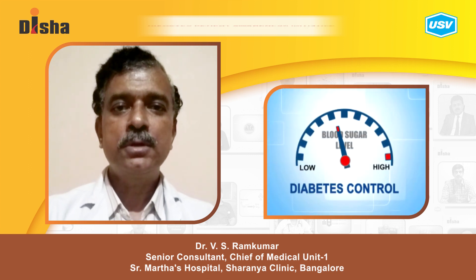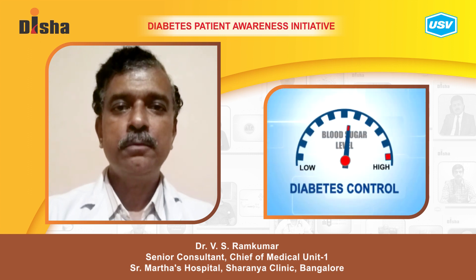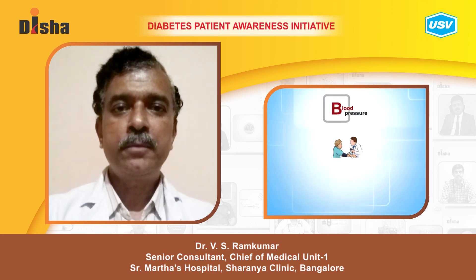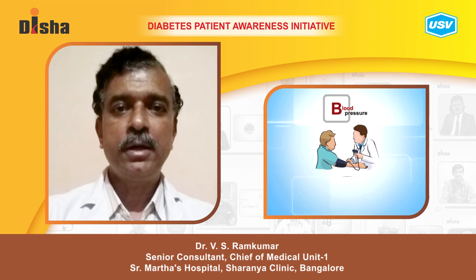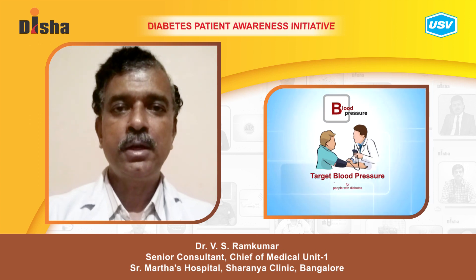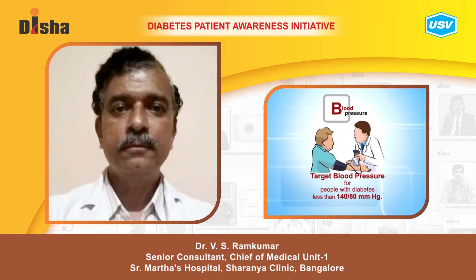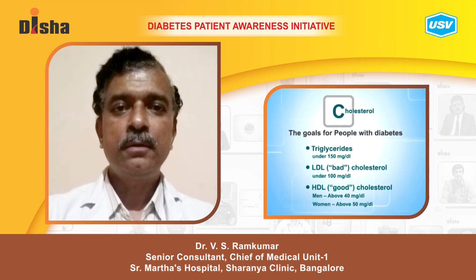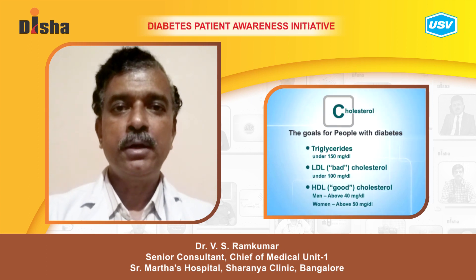What are the tips for preventing diabetes complications? First and foremost, it is important to maintain blood sugars optimally with the HbA1c level below 7. The blood pressure has to be maintained below 130 over 80 millimeters of mercury.